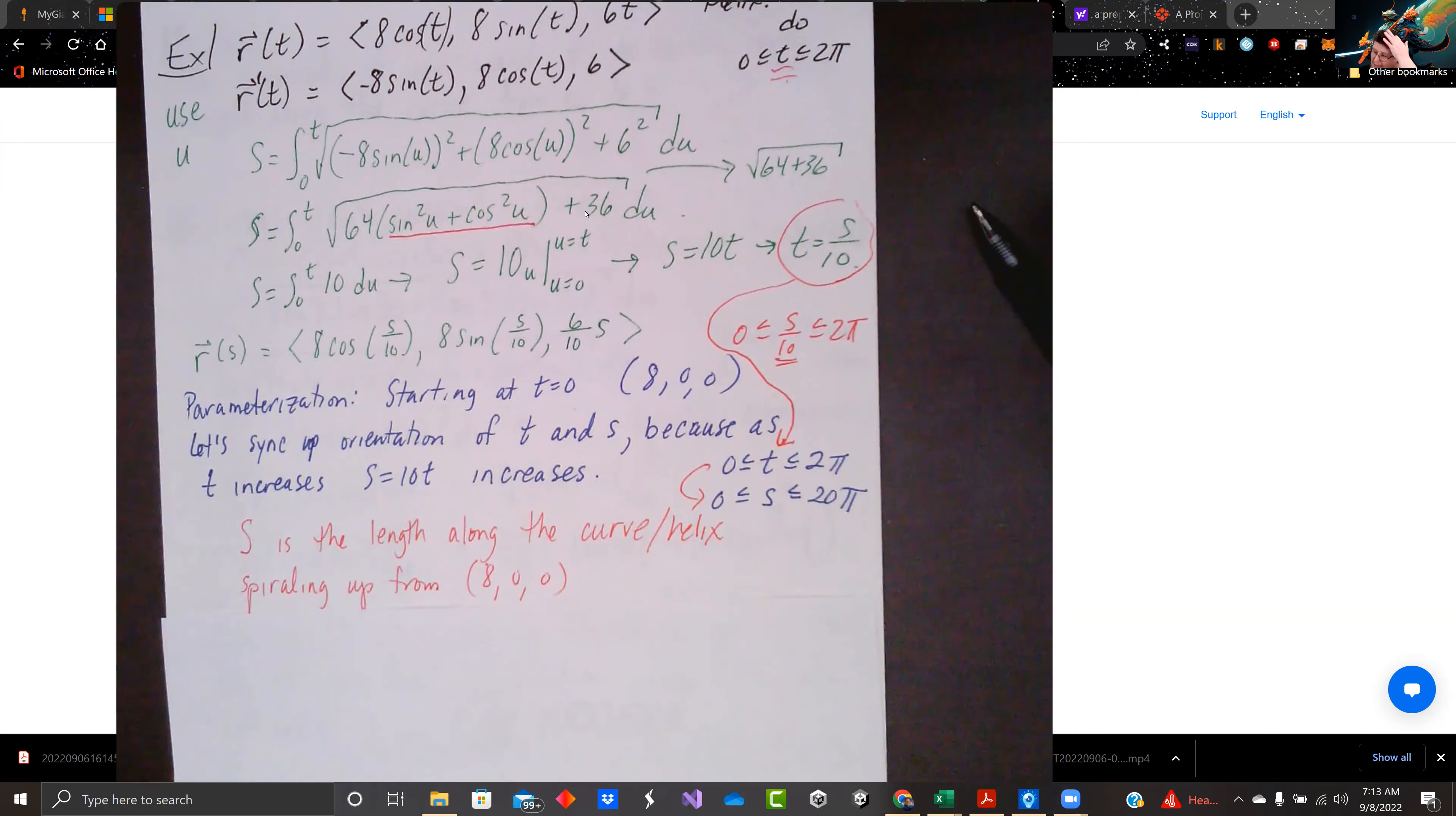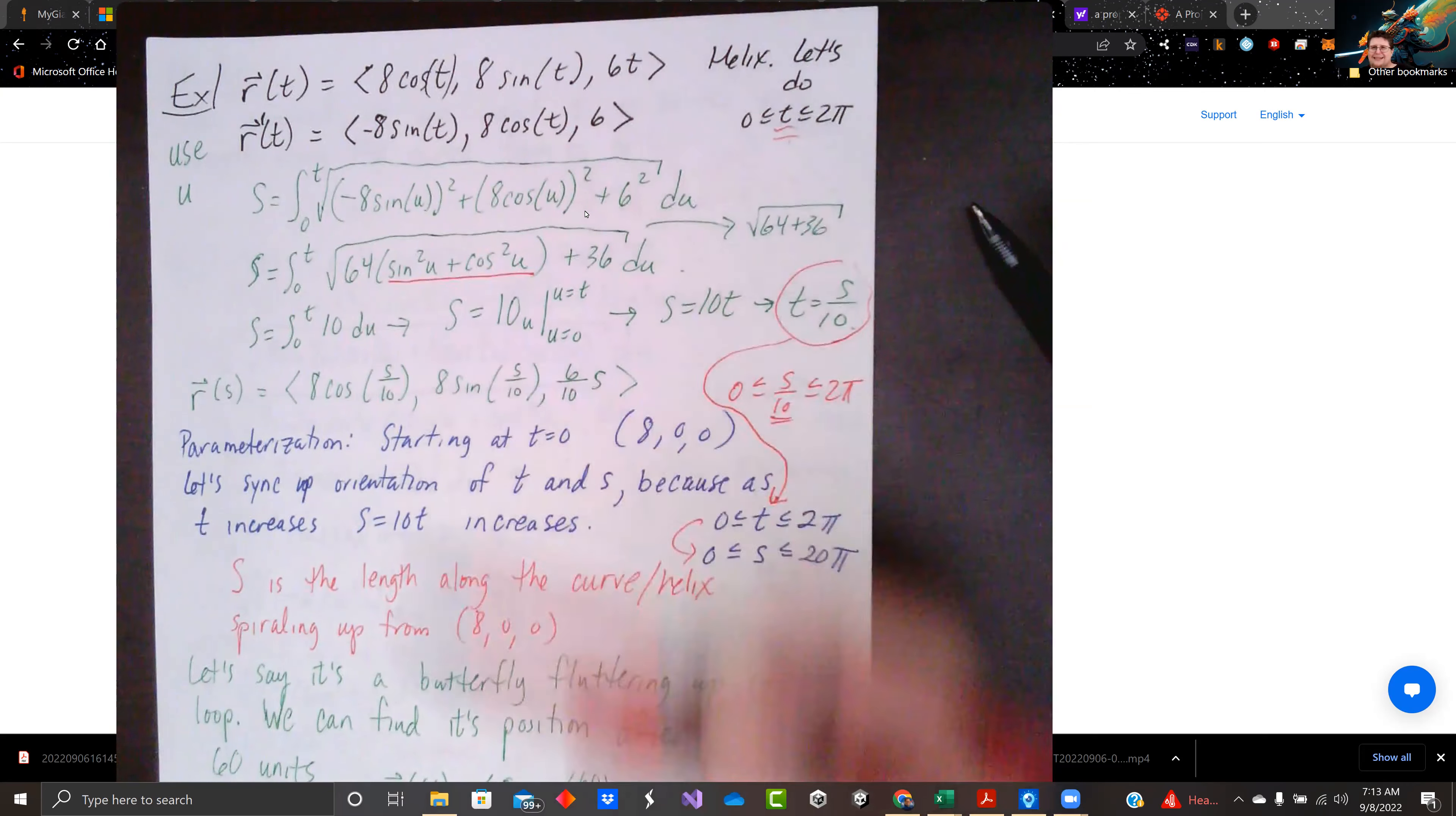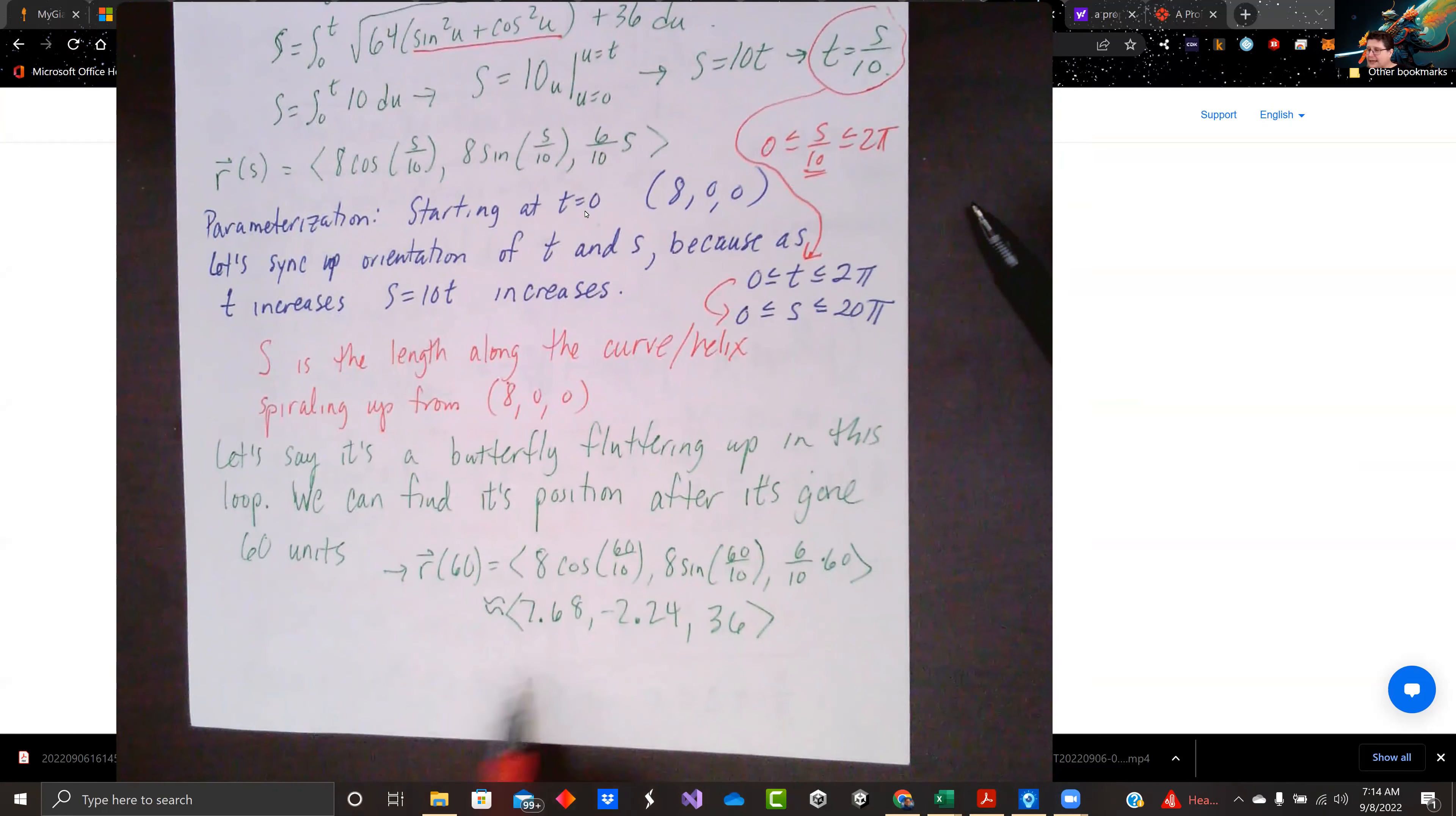So this is now doing s rather than t. Now we're doing little distance steps along this route, spiraling up along this helix that we've created. And if it was a butterfly, like fluttering up along this little loop, we could find its position. That's because that's what r is. R is a position vector. It points to a location. We could find its position after any given time with the r(t), or after any given distance that the butterfly has flown using r(s). So let's say it flew 60 units. We just plug in 60, and we can see it started at (8,0,0), and now it's at (7.68, negative 2.24), and it's at 36 in the air.